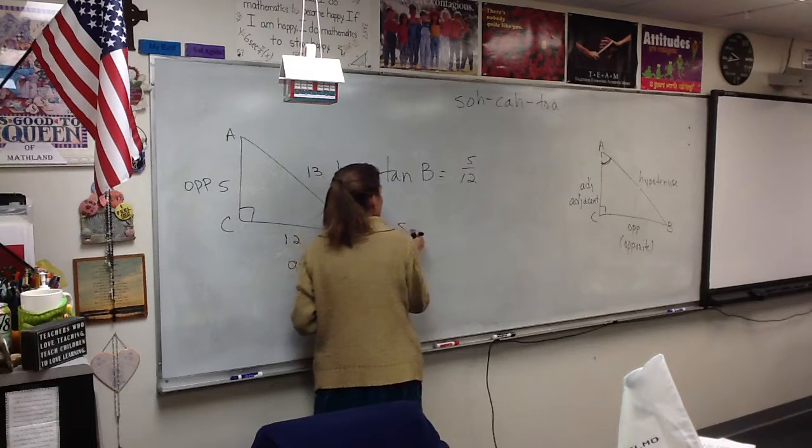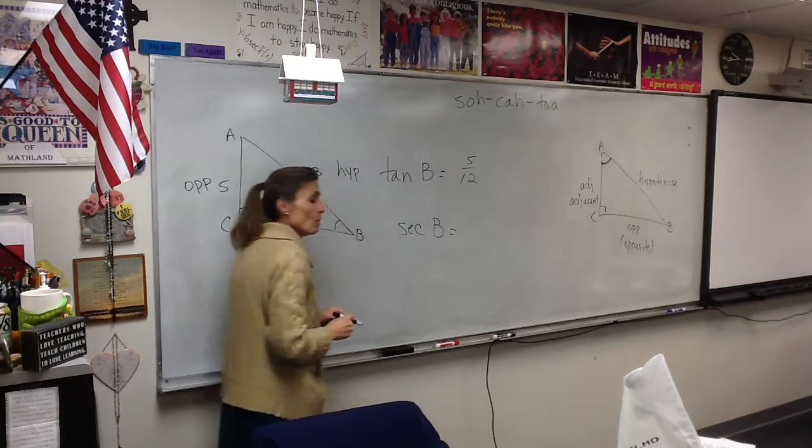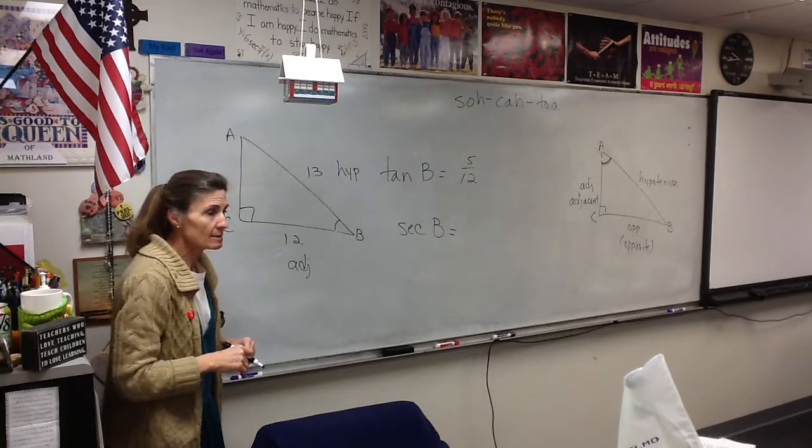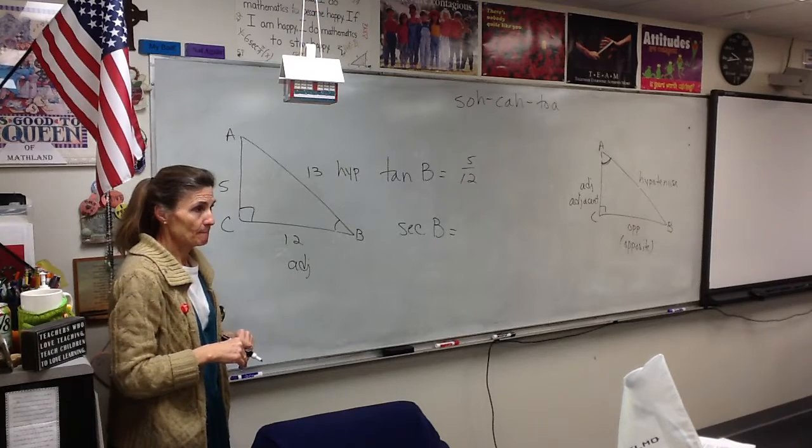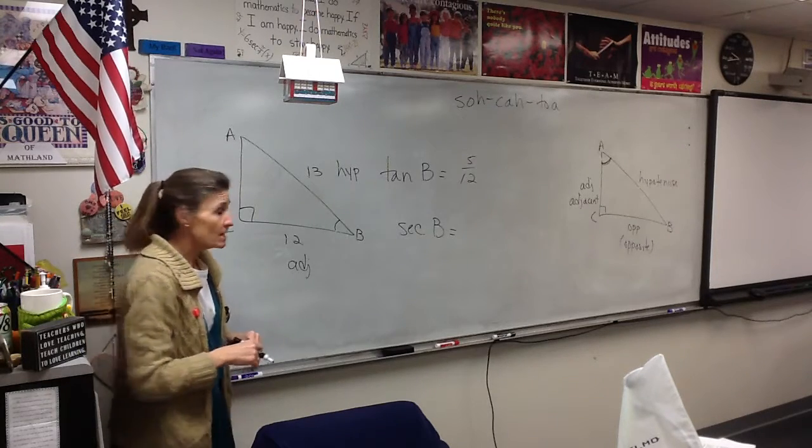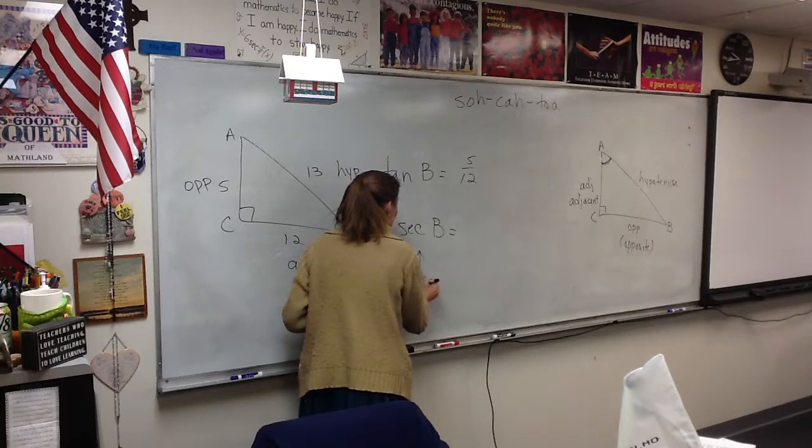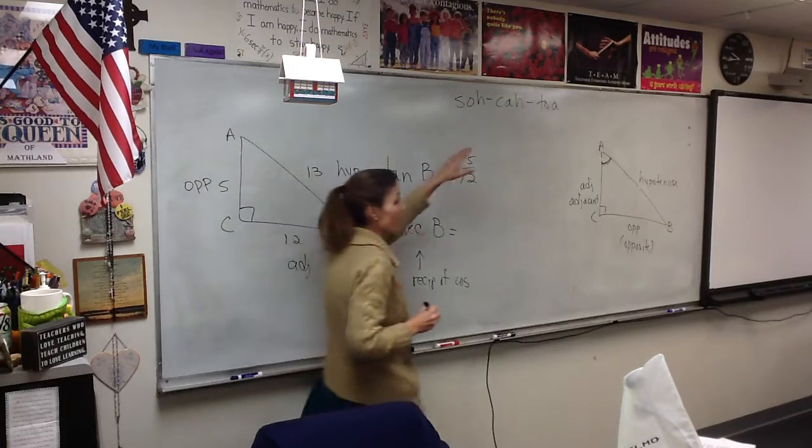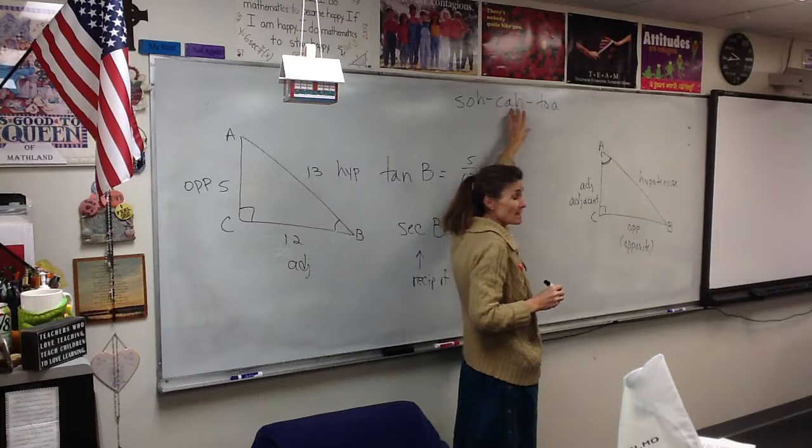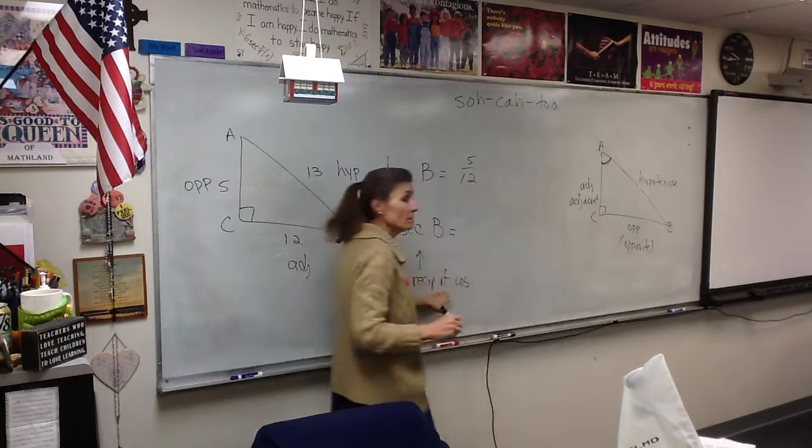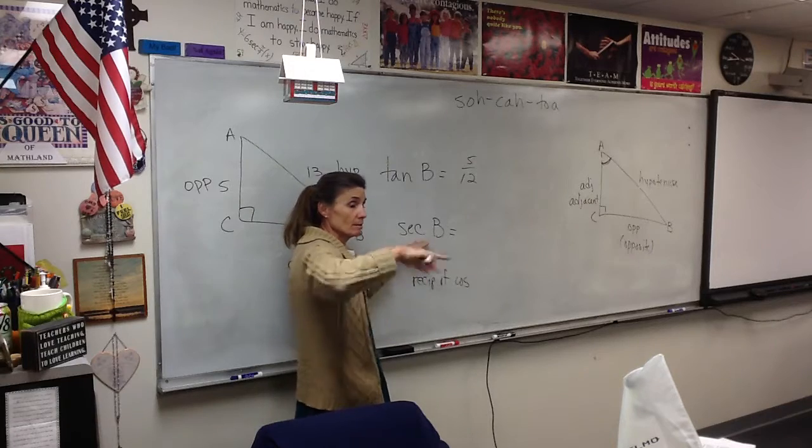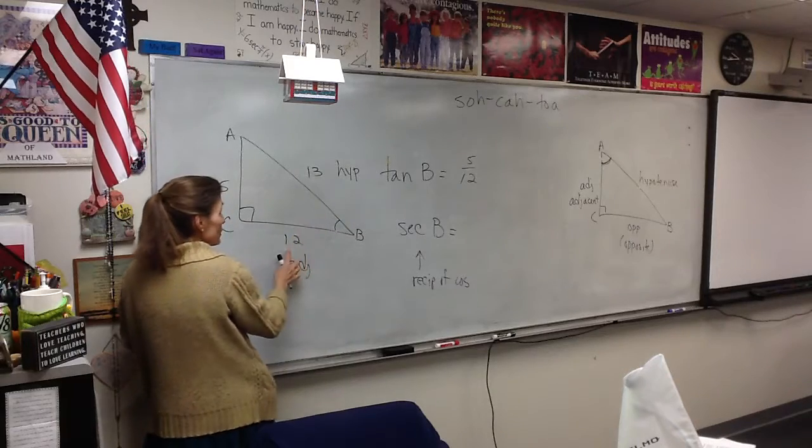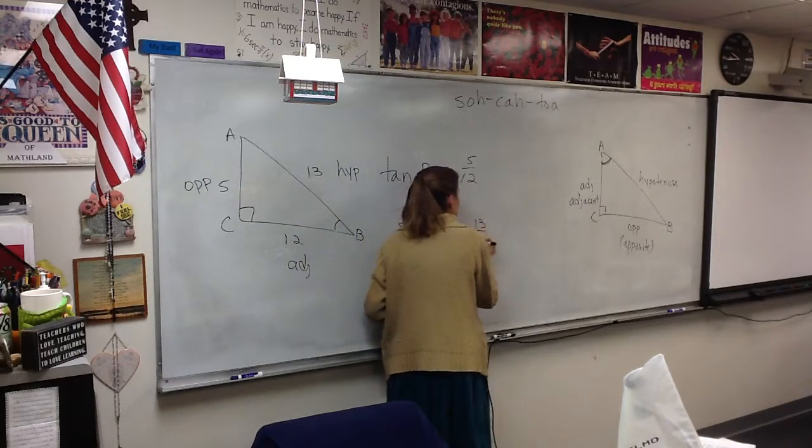Let's do the secant of angle B. Whoa, whoa, whoa. Wait a minute. Secant. What's the secant, the reciprocal of? Cosine. So secant is reciprocal of cosine. What's cosine? That's adjacent over hypotenuse. So what will secant be? Hypotenuse over adjacent. So hypotenuse over adjacent, that would be 13 twelfths.